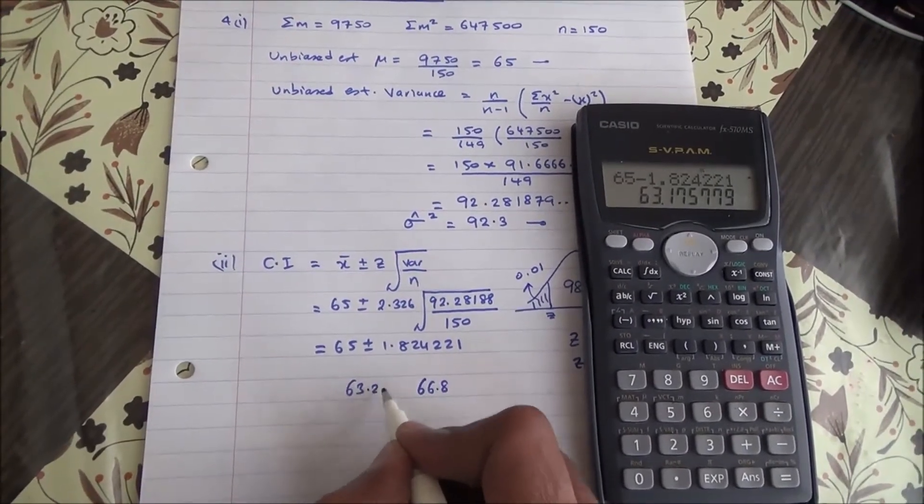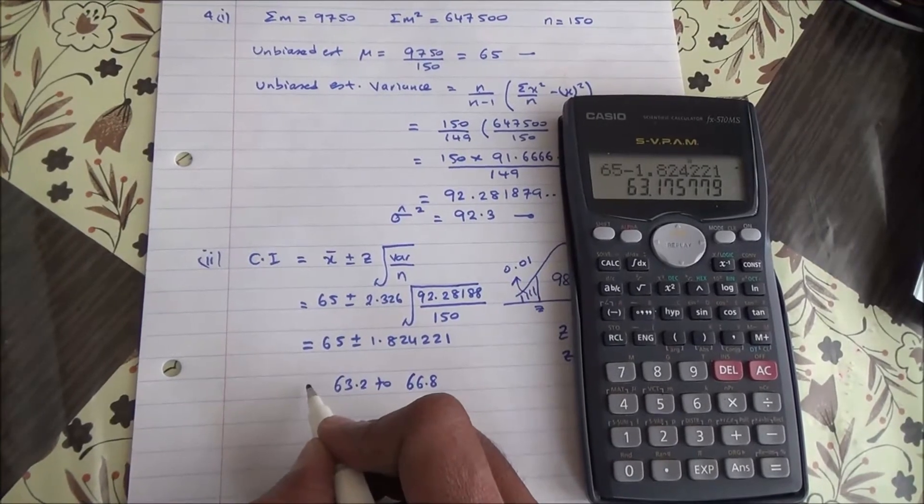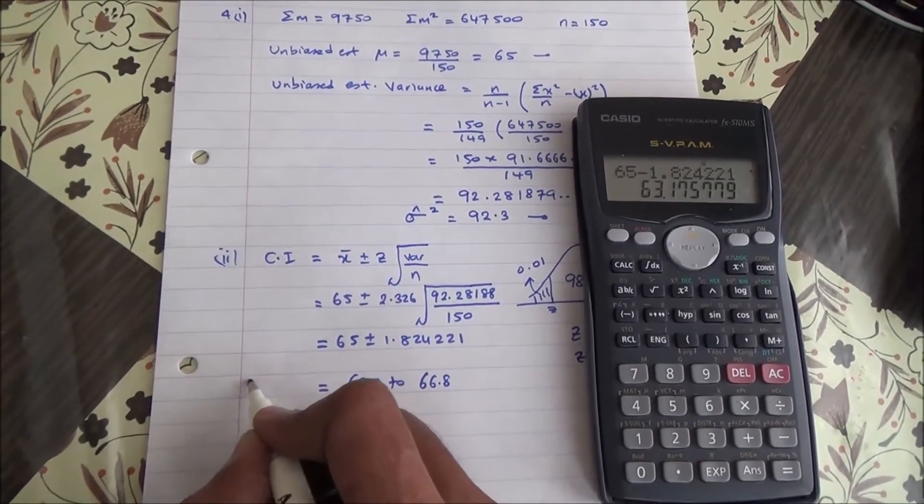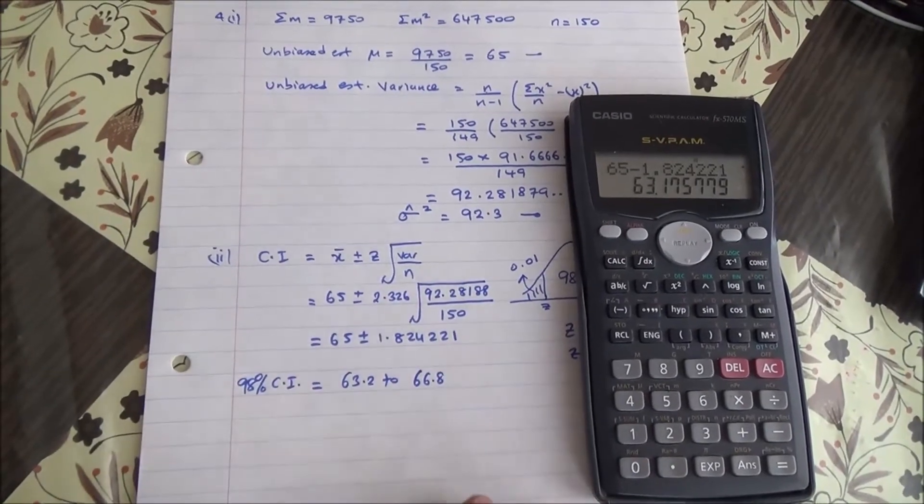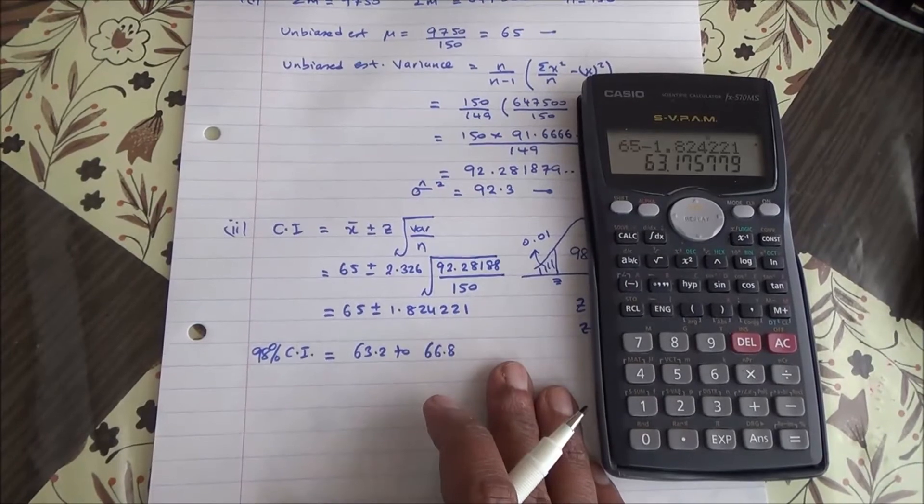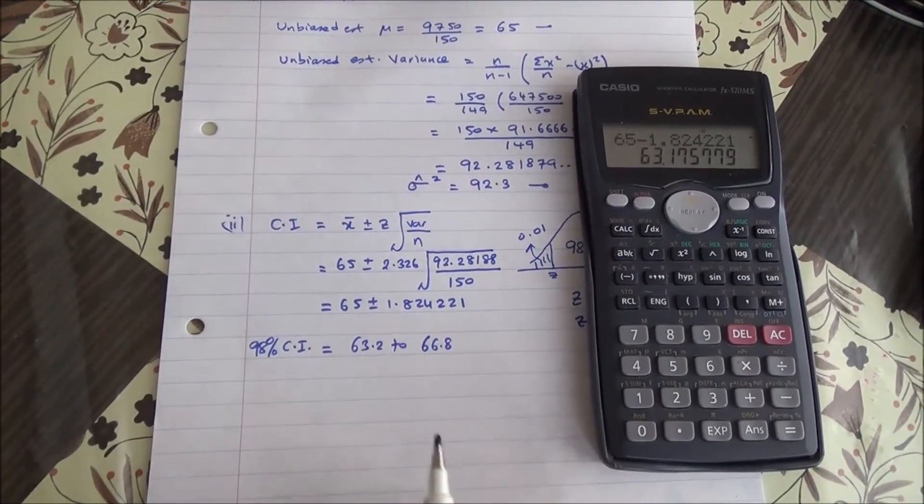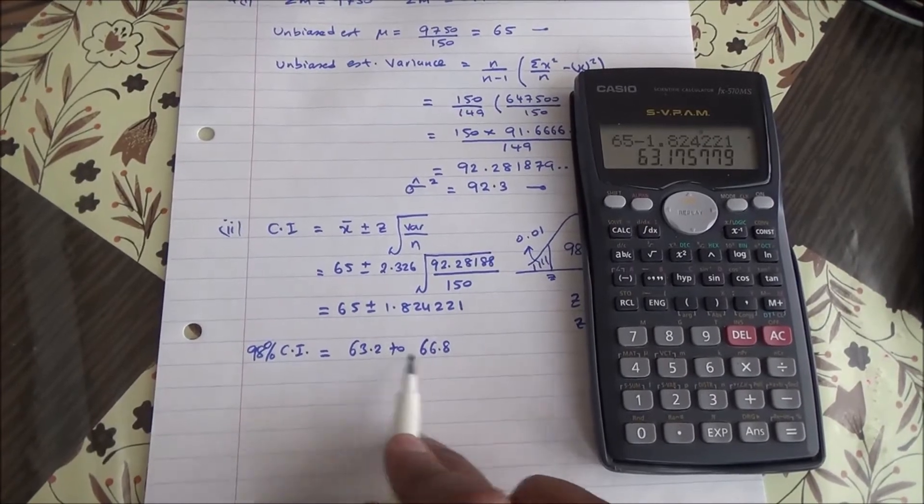So 63.2 to 66.8 is going to be the 98% confidence interval. That means I am 98% confident that my mean is going to fall between these two extreme values.